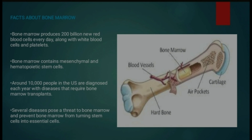Now the last thing: facts about bone marrow. Lagbhag 200 billion new red blood cells har roz hamare bone marrow mein produce hote hain, white blood cells aur platelets ke saath. Bone marrow mesenchymal aur hematopoietic stem cells ko contain karta hai. Around 10,000 people US mein har saal bone marrow transplant ki requirement ke liye diagnose karaate hain. Bahut saari diseases hain jo prevent karti hain bone marrow mein stem cells se essential cells mein convert hone ko.